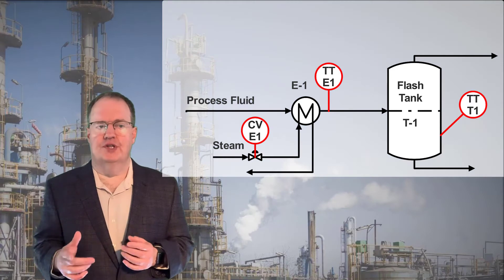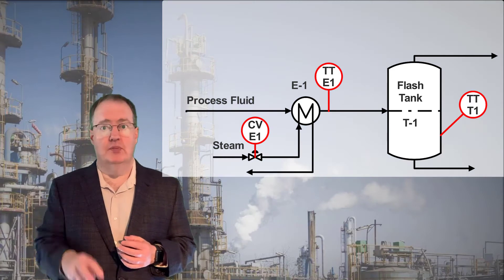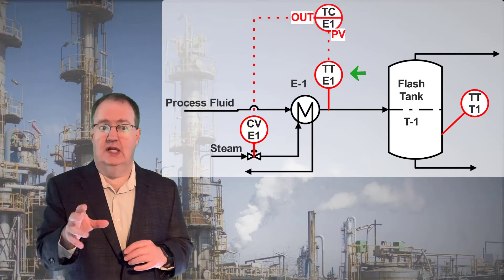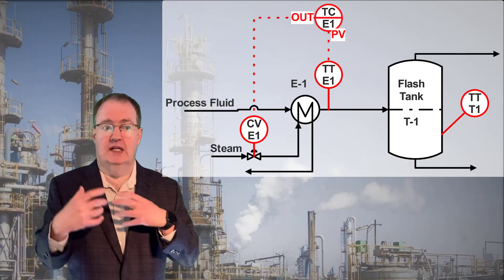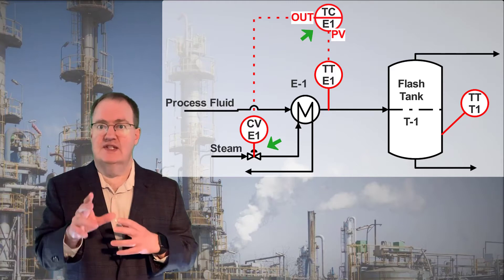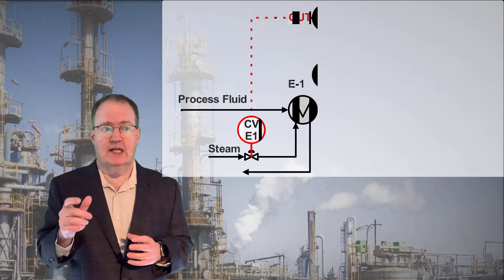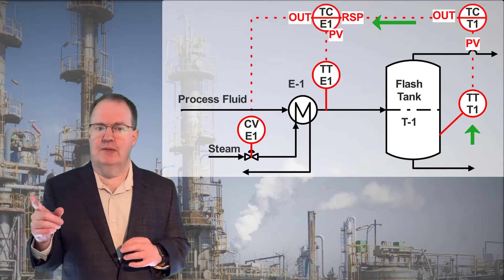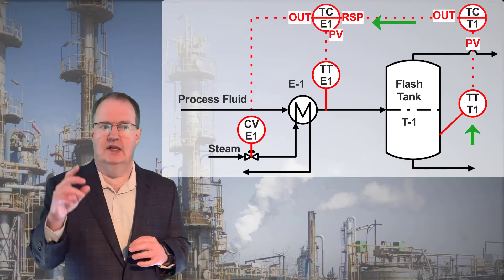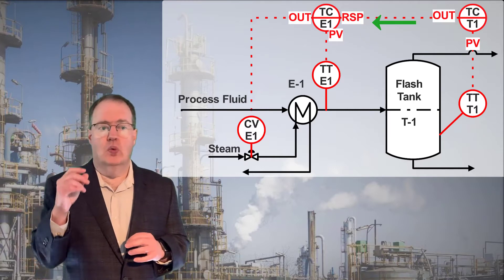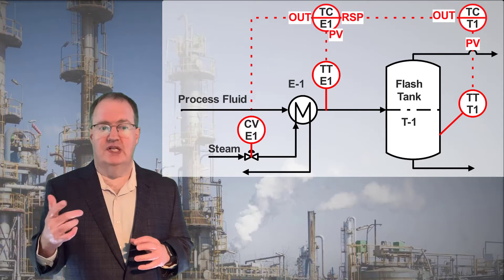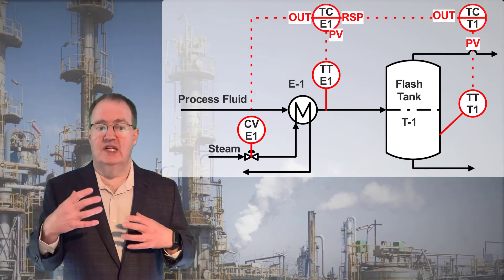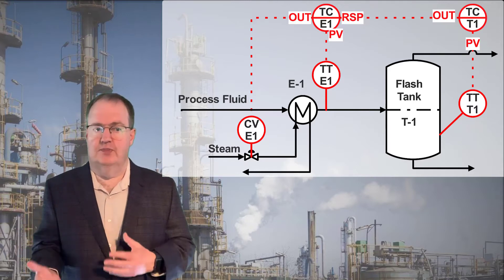The improved solution to this problem is called a cascade control scheme. We're going to implement two controllers. First, we're going to control TT E1, the exit temperature from the heat exchanger, which will be a fast loop by manipulating the steam valve with the controller TCE1. The second loop, with the slow dynamics, will control TT T1 by manipulating the set point to the first controller, TCE1. When T1's temperature is low, it raises the set point for TCE1. That controller will react to an increased target set point for TTE1 by manipulating our one degree of freedom, the steam valve.